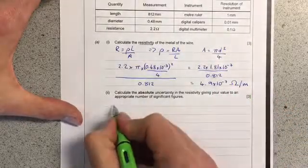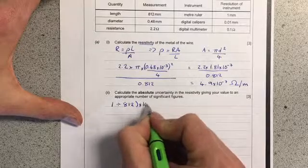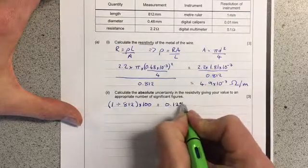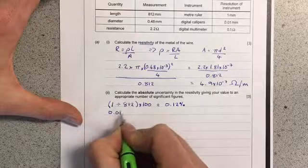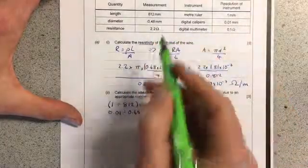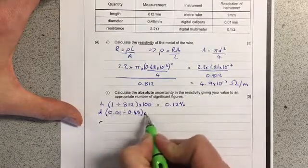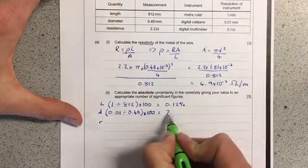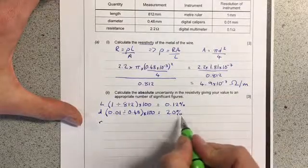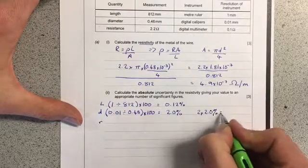For length: 1 millimeter divided by 812 millimeters times 100 equals 0.12%. For diameter: 0.01 divided by 0.48 times 100 gives 2.0%. Remember that diameter is squared in the formula, so this error happens twice - that's 2 times 2.0%, which equals 4%.